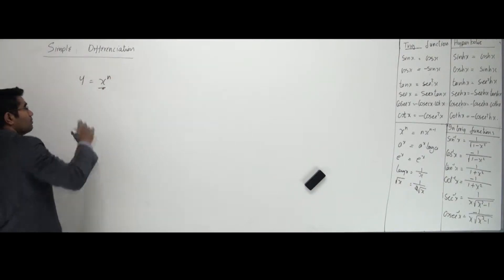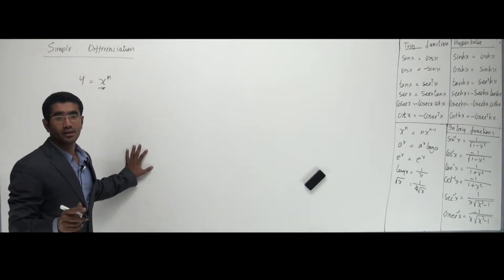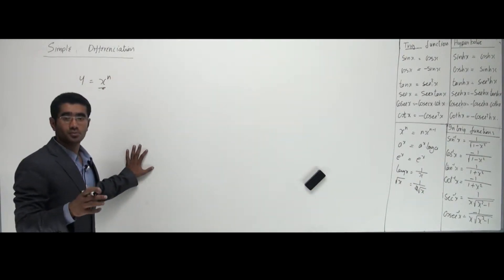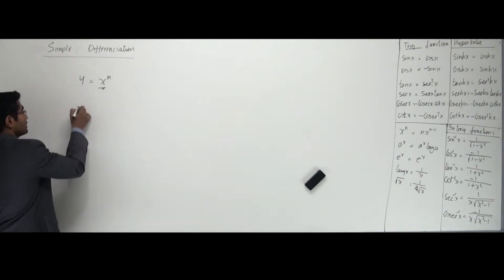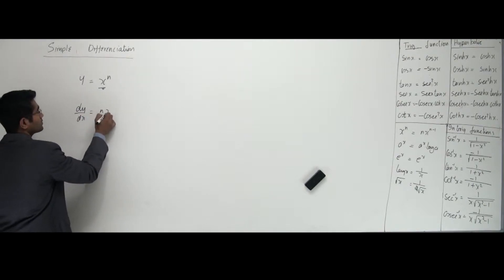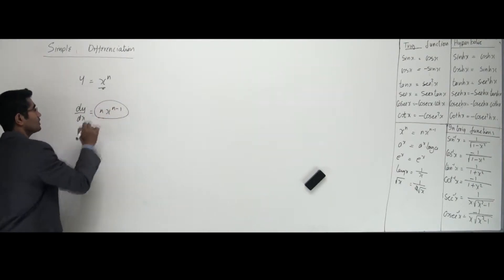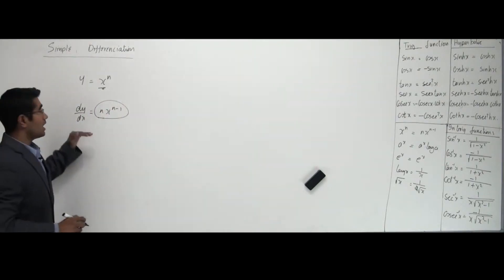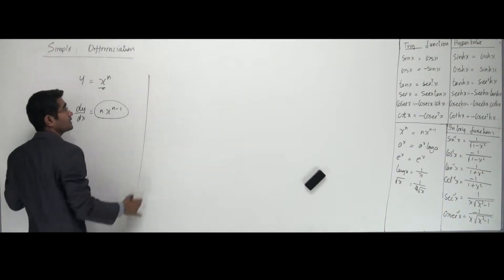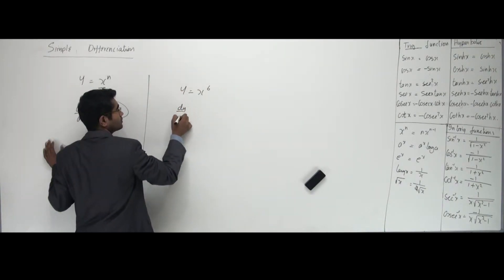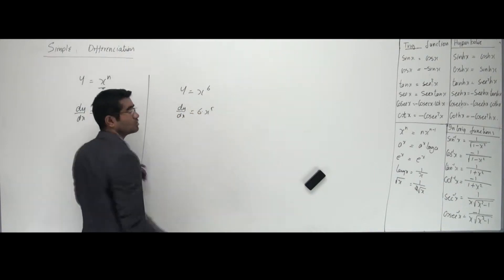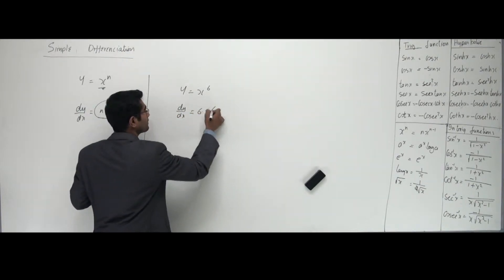This is my first important formula to know. If I differentiate that, I get dy by dx equal to n into x to the power n minus 1 — that's the formula, very simple. How do I use this? Let's say I have y is equal to x to the power 6. How do you differentiate this? dy by dx is 6 into x to the power 5, or I can write 6 minus 1.